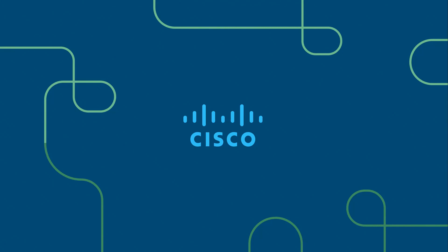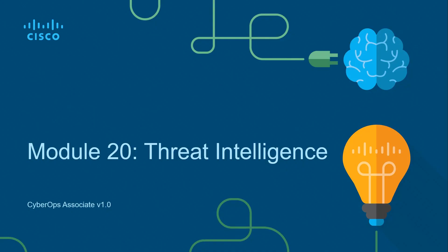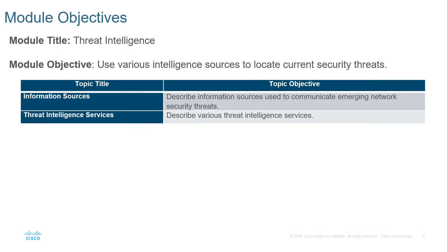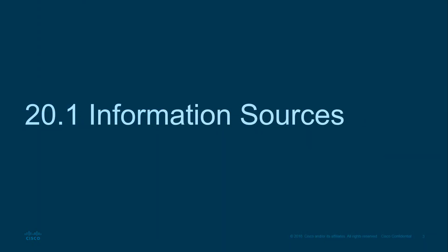The goal of this video series is to help prepare learners for the Cisco 200-201 certification, focusing on understanding the Cisco cybersecurity operations fundamentals. This is module 20: Threat Intelligence. In this module we're looking at sources of information and we're going to start describing the threat intelligence service.